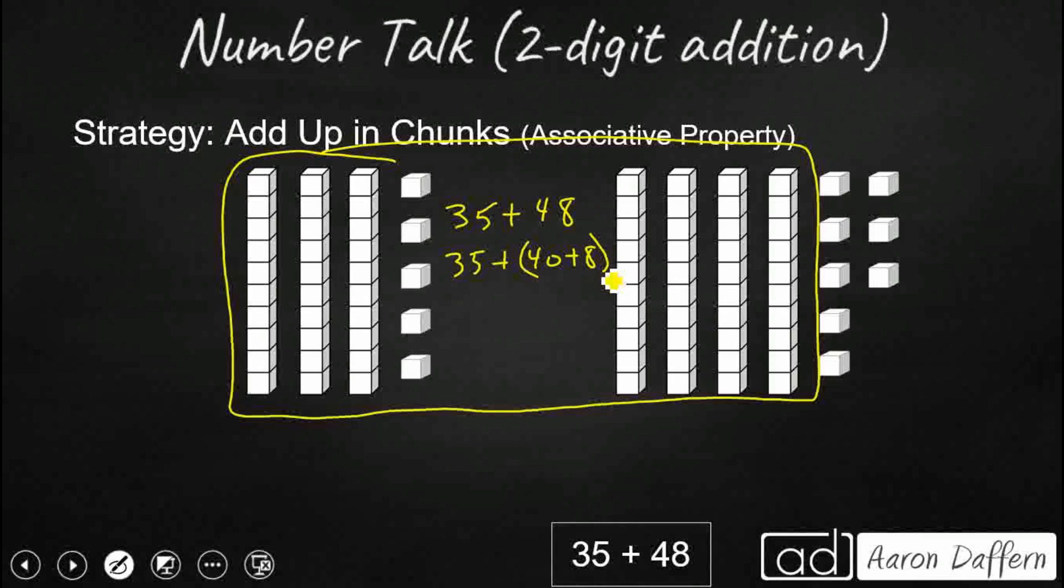And then I'm going to use my associative property to simply regroup how I add them. So instead of 40 plus 8, I'm going to add my 40 plus my 35 and leave my 8 for whatever's left over. So 35 plus 8 is going to be 75. Add 8. Got to regroup a little bit, but that's fine. It's going to get me back up to my 83.